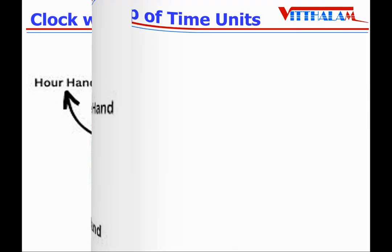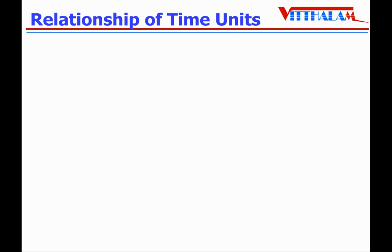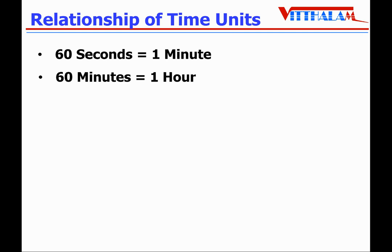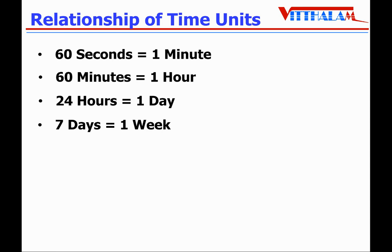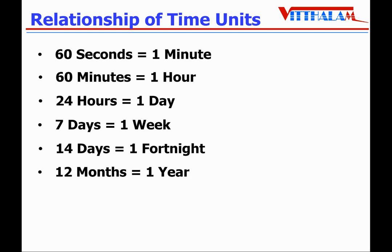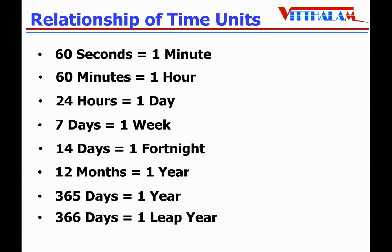Now let's understand the relationships of units of time. 60 seconds equals one minute. 60 minutes equals one hour. 24 hours makes one day. 7 days makes one week. 14 days means one fortnight. 12 months equals one year, and 365 days also equals one year. In a leap year there are 366 days, so 366 days equals one leap year. These are the different units and their relationships.